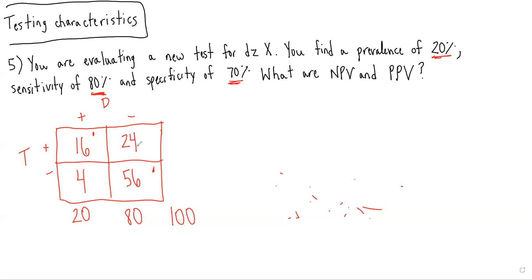Then we can total our rows. So 40 patients had a positive test, 60 had a negative test. And now for getting the actual question they're asking for. So NPV is the probability of not having the disease given a negative test result, which in this case would be 56 over 60.